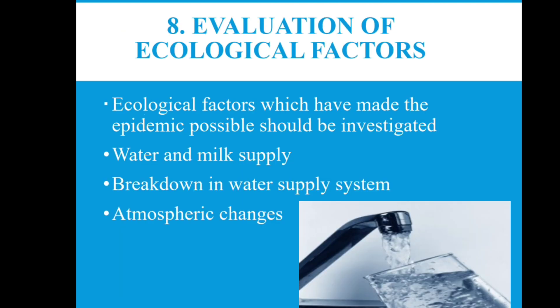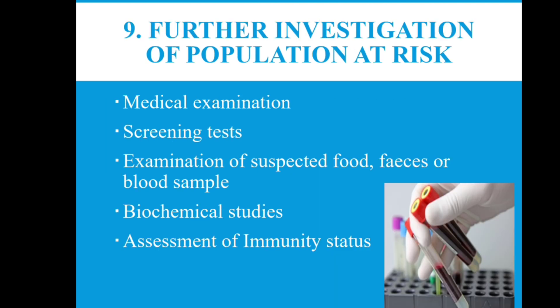Evaluation of ecological factors — the eighth step. Ecological factors that made the epidemic possible should be investigated, such as water and meat supply, breakdown in water supply systems, or atmospheric changes. Any such change could give rise to the ecological factor involved. Further investigation of population at risk may be via medical examination, screening tests, examination of suspected food, faeces or blood samples, biochemical studies, and assessment of immunity status.